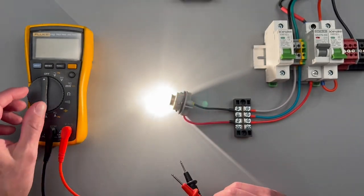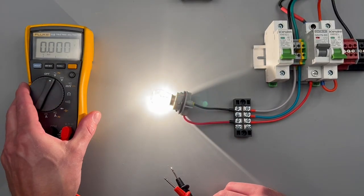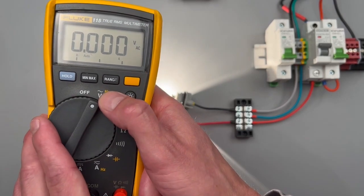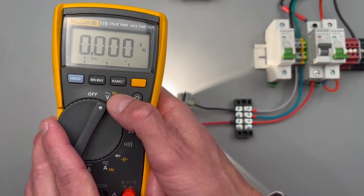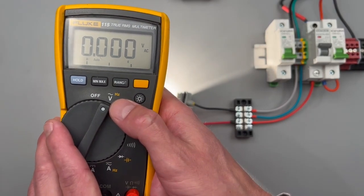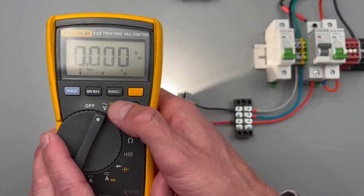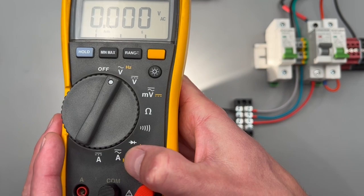I'll go ahead and put my meter to volts AC. Whenever you see a sine wave on your meter, that's going to be indicating to you that that setting is for alternating current. So this is saying alternating current voltage.